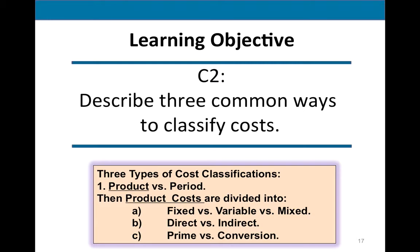So let's get into types of costs. A lot of decisions managers make will be about tracking costs when we manufacture products, so a lot of our focus is on manufacturing businesses. There are three types of cost classifications. First, we classify costs as either product or period — very important. After distinguishing between product and period costs, we further classify product costs into three groups. Another term for product costs is manufacturing costs.